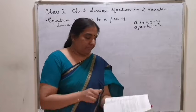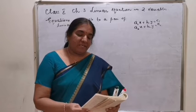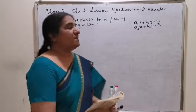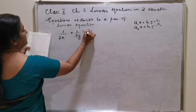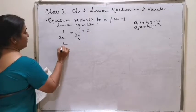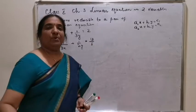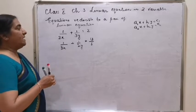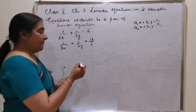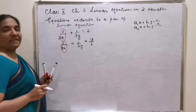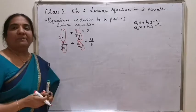Exercise 3.6. The first question is: solve the following pair of equations by reducing them to a pair of linear equations. The equations are in this form: 1 by 2x plus 1 by 3y is equal to 13 by 6. When you look into this pair of equations, you can see the variable x and y is placed in the denominator position.